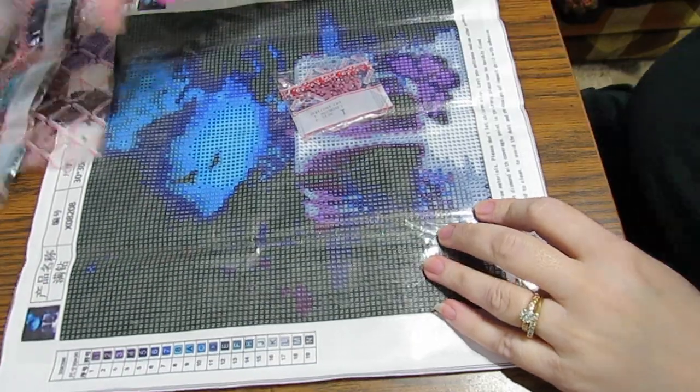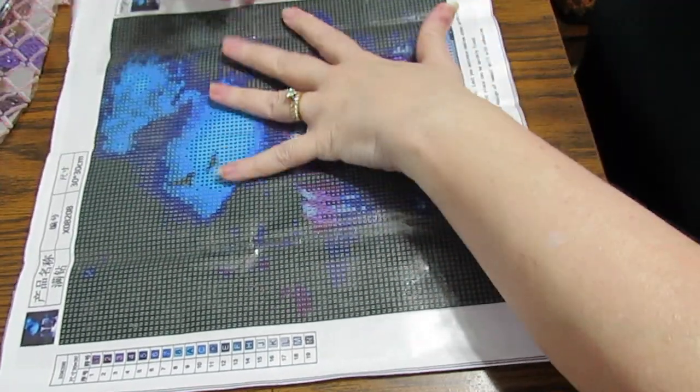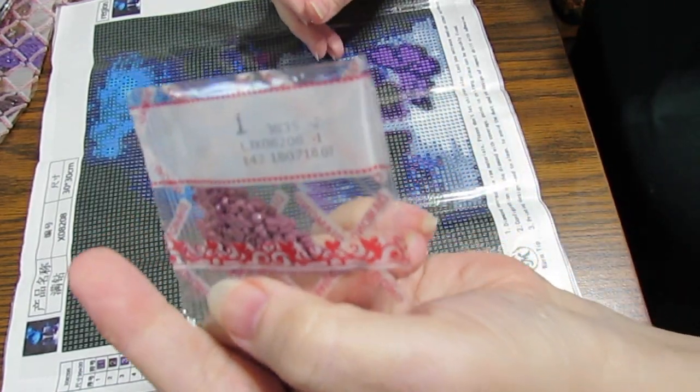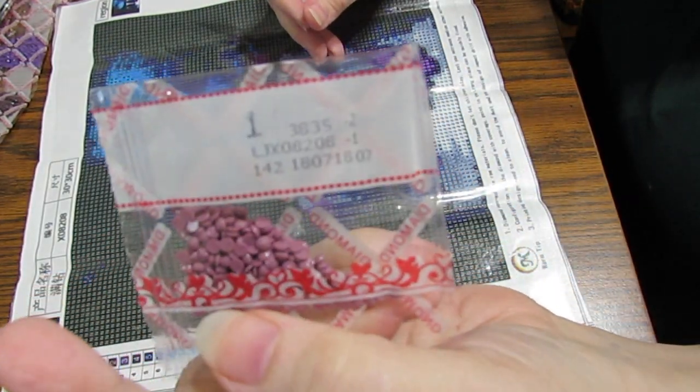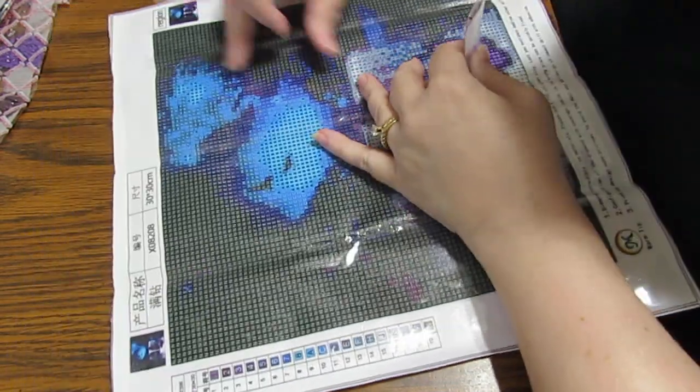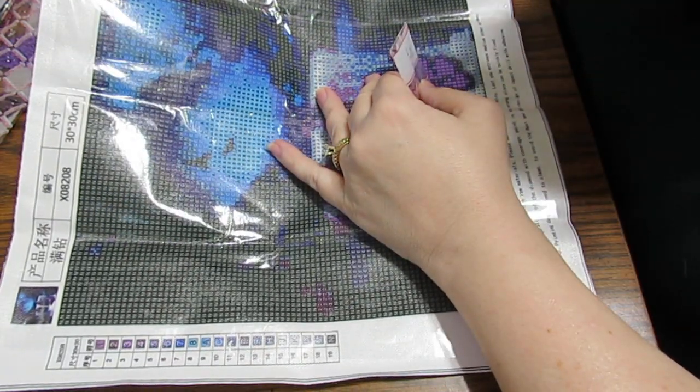Now the one thing that I do like about these clear covers is I have picked up number one and I can look on here for number one and I can do all the number ones because I can see them through the plastic.